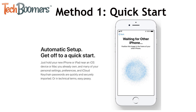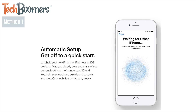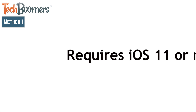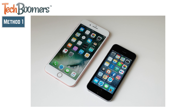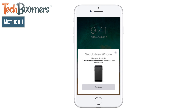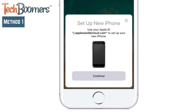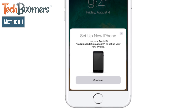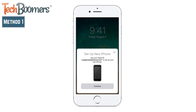The first method you can use is the Quick Start feature. This will allow you to wirelessly transfer your data from your old device to your new one. This method requires your old iPhone to be running iOS 11 or newer. To use this method, turn on both devices and move them close together. The Quick Start option should automatically appear on your screen. Tap Continue to begin using Quick Start, then simply follow the instructions on your screen to transfer all your data.